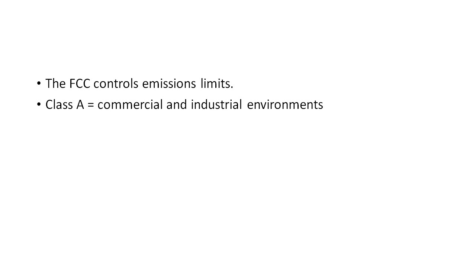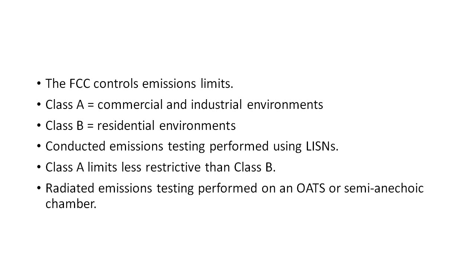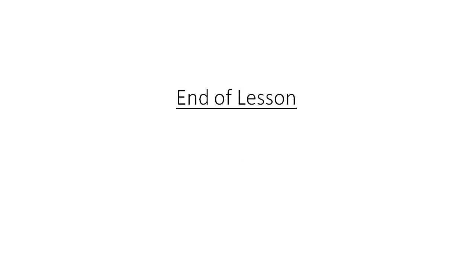Now let's just quickly review the highlights of this lesson. The FCC controls the limits on both conducted and radiated emissions. It separates digital devices into two classes. Class A devices are those used in commercial and industrial settings. Class B devices are those used in residential settings. Conducted emissions are performed by taking measurements from a LISN, which helps establish a repeatable test setup across different test labs. The class A conducted emissions limits are less stringent than those of class B devices. Radiated emissions are performed on either an open area test site or inside of a semi-anechoic chamber. Just like with conducted emissions, class B limits are more stringent than the class A limits. And it's here that we've come to the end of the lesson. Please share this if you found it helpful. Thank you.